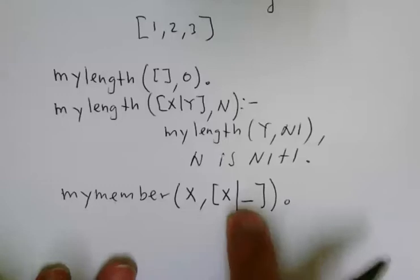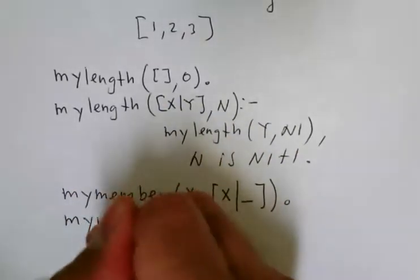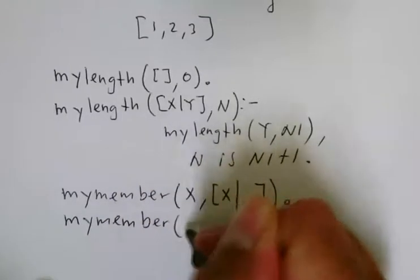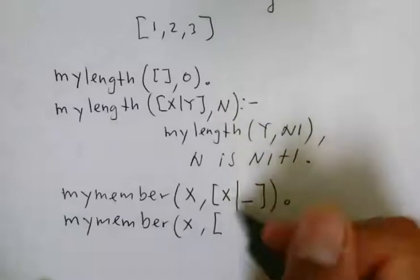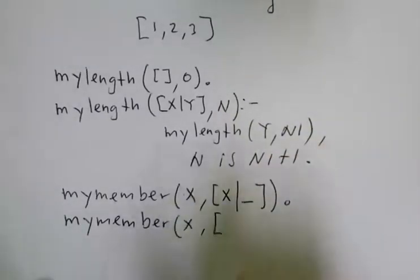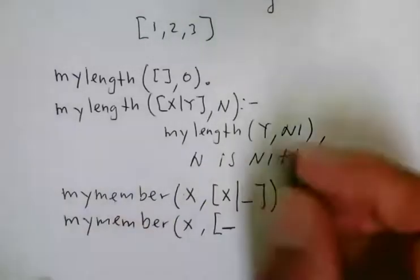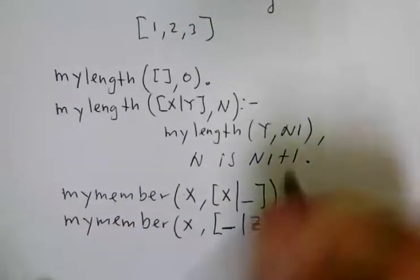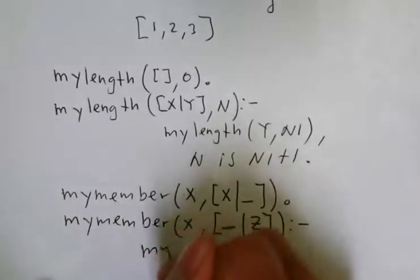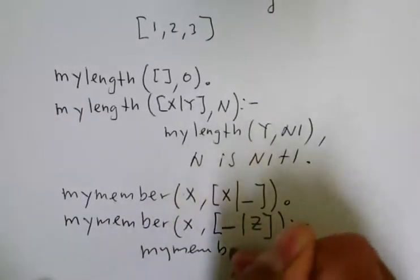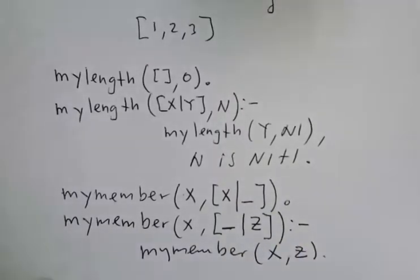Now, maybe X is in the list, but it's not the first one. Then, this would fail, and then we said, okay, let's search for X. I know it's not on the first, it's not the head, because otherwise this would have been successful. Then I'm going to say, I don't care what's on the first of the list, I know it's not X, but I would like to search on the rest of the list. And then I will say, okay, my member, search for X on Z. Very nice, isn't it?